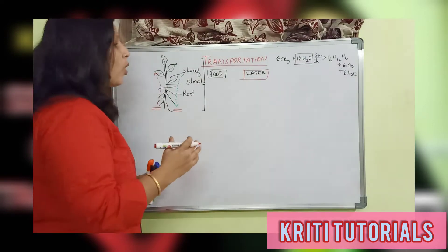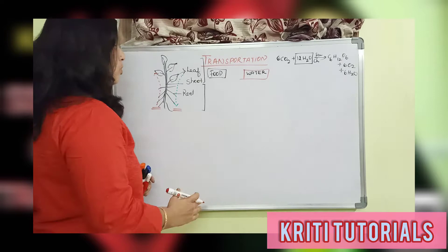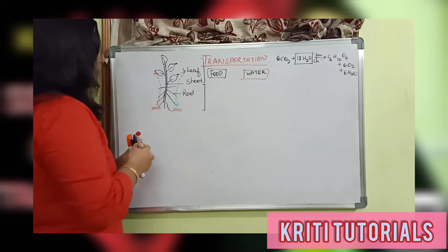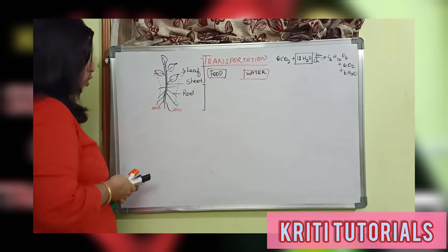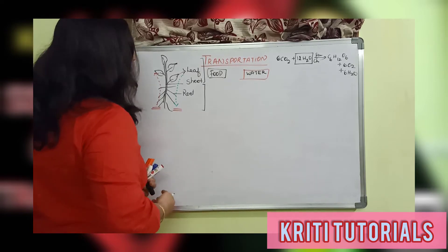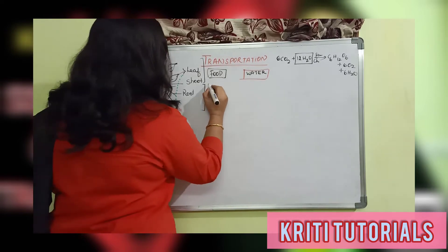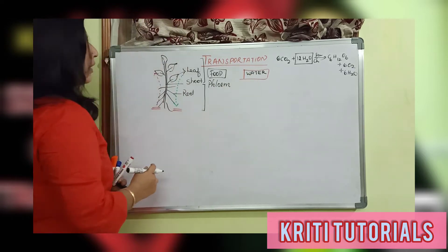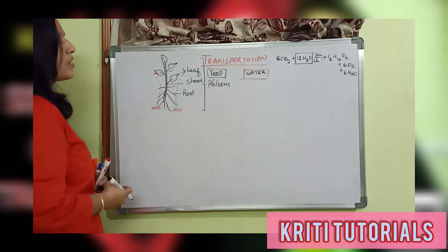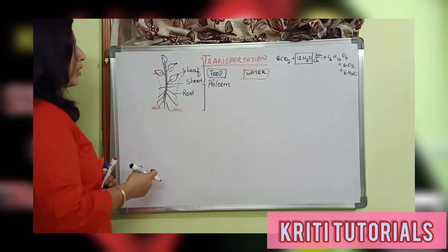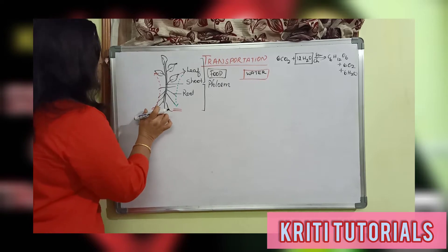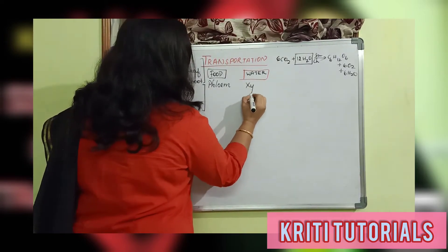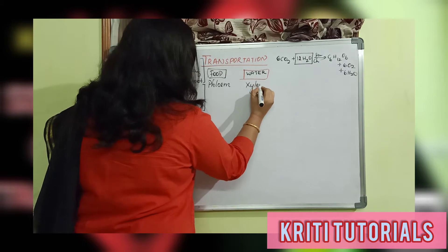What are those two transport channels? The transport channel which transports food to various parts of the plant from the leaf is going to be phloem. The channel which transports water from the root to the upper part of the plant is going to be xylem.